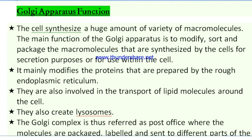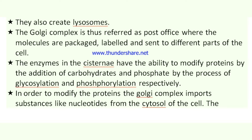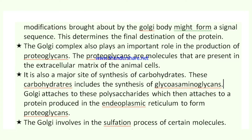The Golgi apparatus also creates lysosomes. The Golgi complex is referred to as the post office of the cell, where molecules are packaged, labeled, and sent to different parts of the cell. The enzymes in the cisternae can modify proteins by the addition of carbohydrates and phosphate through glycosylation and phosphorylation. To do this, the Golgi complex imports substances like nucleotides from the cytosol. These modifications form a signal sequence that determines the final destination of the protein.